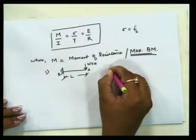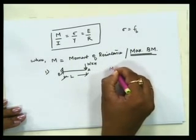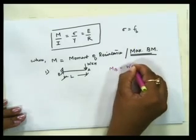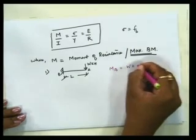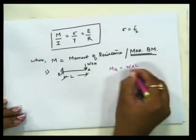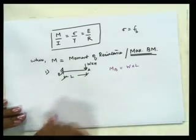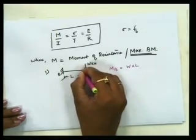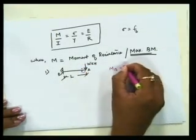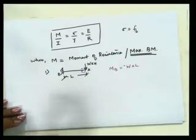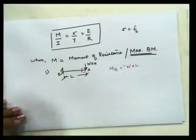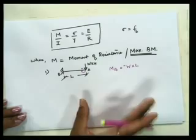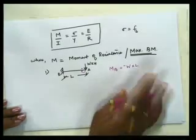At the support, taking the bending moment as force into distance up to the line of action L, the maximum bending moment is W into L. The nature of the force is hogging, so it is minus W×L, but the negative sign does not play a role here — we just want the maximum value, which is W×L.